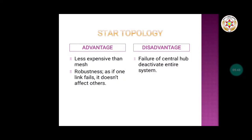A disadvantage of star topology is that failure of the central hub deactivates the entire system. If the hub fails to work, the entire network goes down because every device is dependent on the hub.